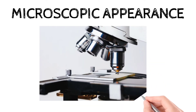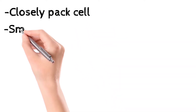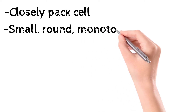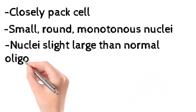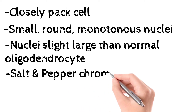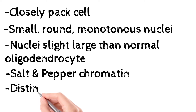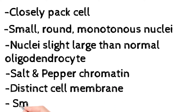On microscopy, the cells are very closely packed with small, round, monotonous nuclei. The nucleus is only slightly larger than normal oligodendrocytes and looks similar to them. The nuclear chromatin is of the salt-and-pepper variety, like that of small cell malignancy. There is a very distinct cell membrane. Sometimes small nucleoli can also be observed.